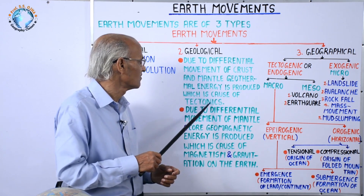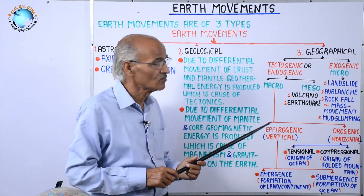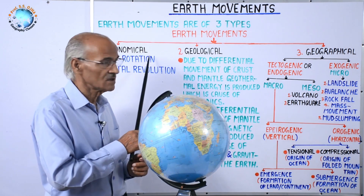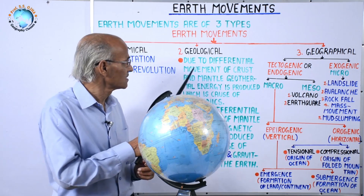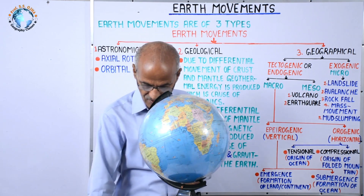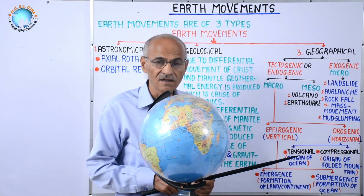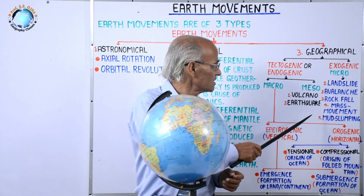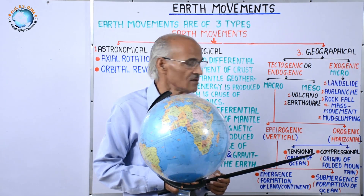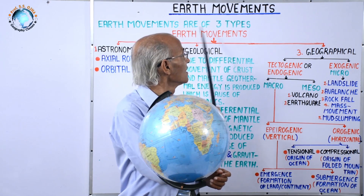So the first one is geothermal energy and the second is geomagnetic energy. Now the third and very important type is geographical movement. Students of astronomy are largely concerned with the first, scholars of geology with the second, but students of geography have their main concern with geographical movement, because the earth's crust is changing due to some geological as well as exogenic factors. We shall study the forces affecting the earth's crust in detail.